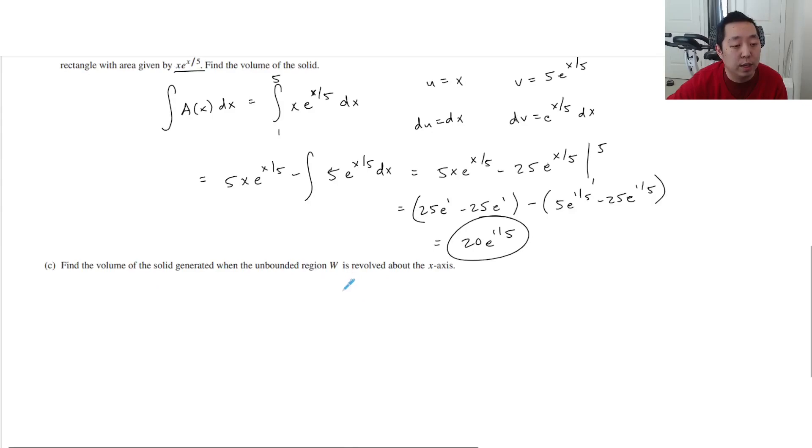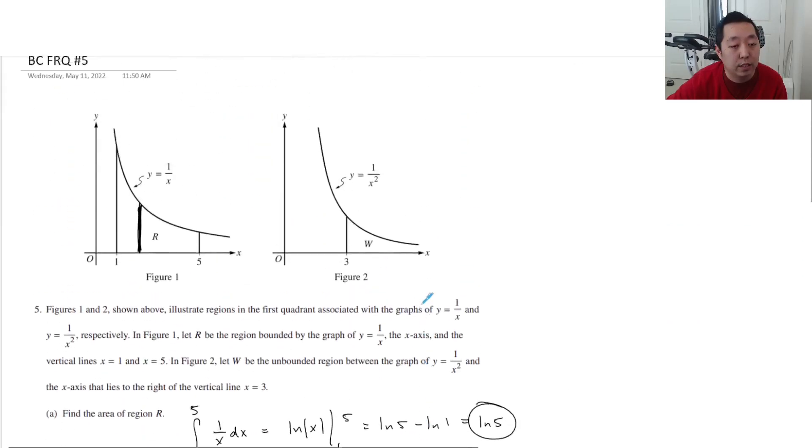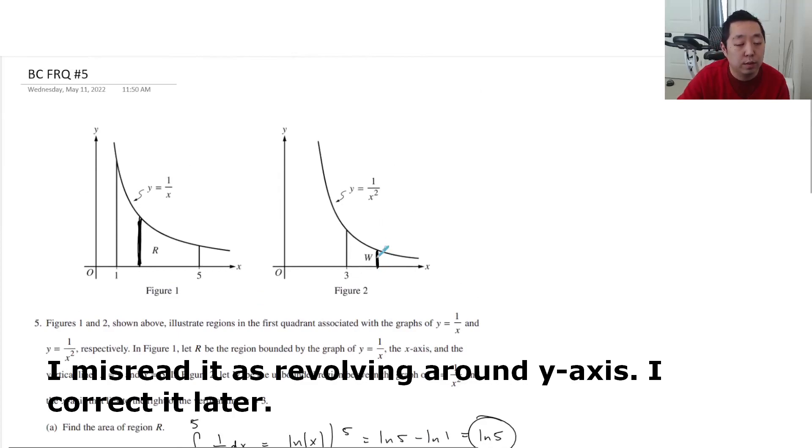Part C: Find the volume of the solid generated when the unbounded region W is revolved around the x-axis. We're going to take this region and revolve it around the x-axis. My suggestion would be to do shell method. I know shell method is not popular, but the integral will probably be easier. With shell method, this is my r, a thin piece of shell that I'm going to unravel. The width is dx.